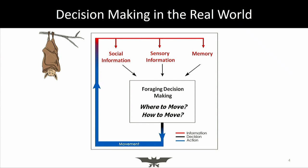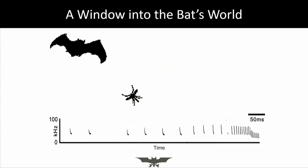We try to understand how a bat integrates these different types of information into decisions, which are usually measured by movement. I'll start by talking about sensory information — this is where I started. I originally was a sensory ecologist, and the main reason for me to study bats is echolocation: the fact that bats sense the environment through sound emission.